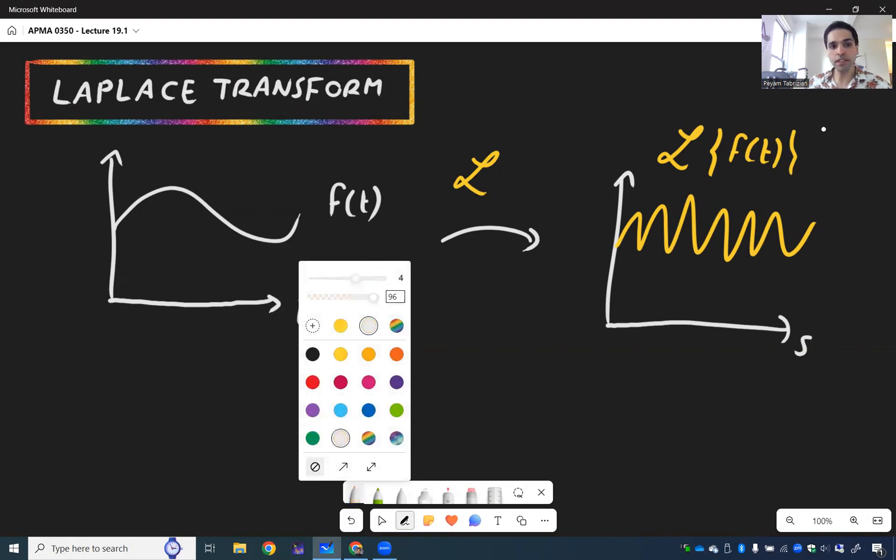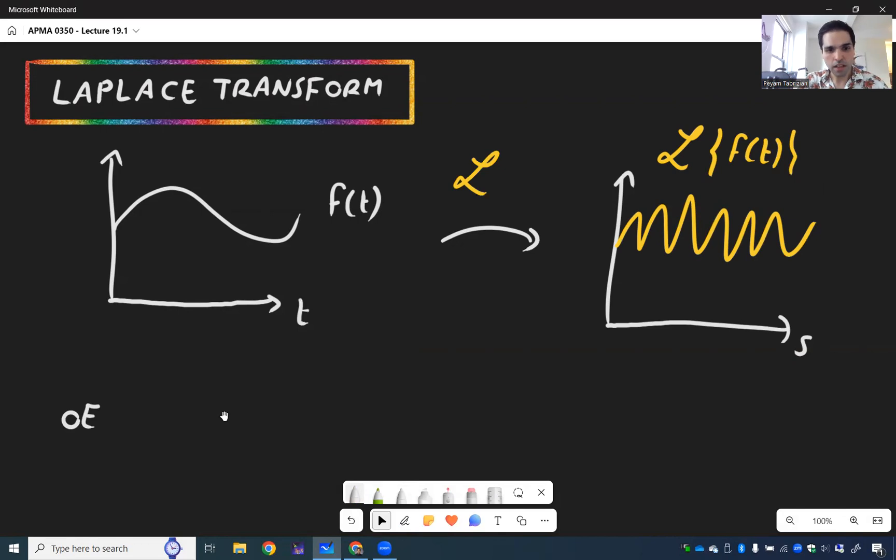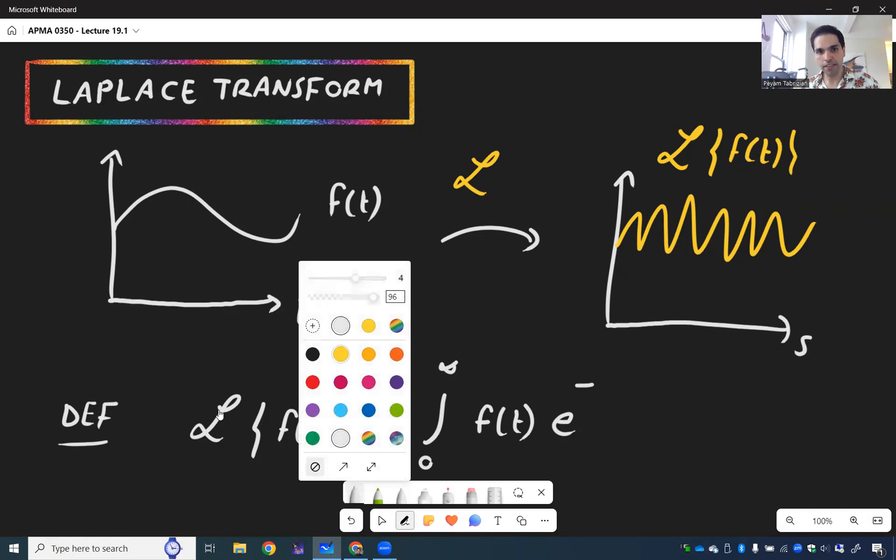And without further ado, here's a definition. So L of f of t becomes the integral from zero to infinity of that function f, but you multiply it by e to the minus st, dt.